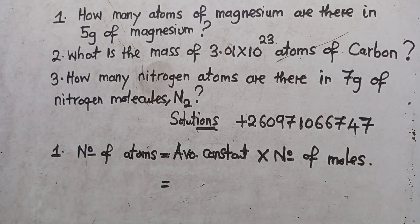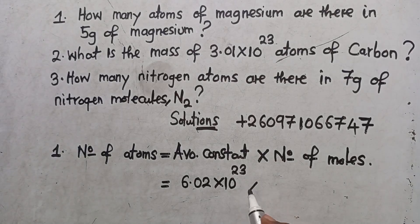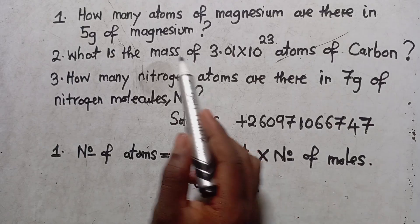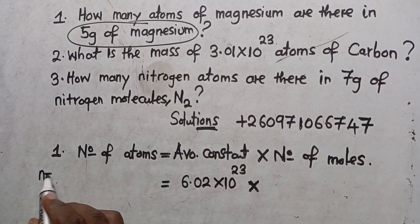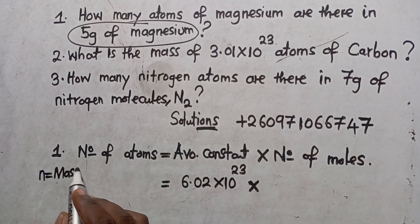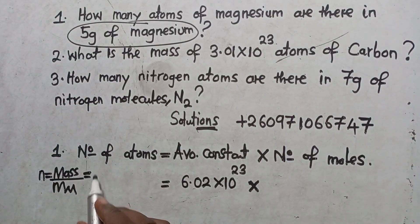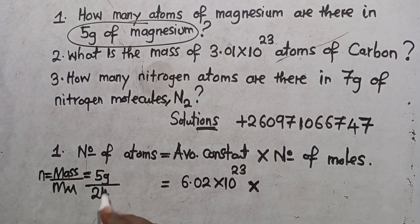What is the Avogadro's constant? The Avogadro's constant is 6.02 — some people say 6.022, but it is just one and the same — times 10 to the power 23. Then you get to multiply it with the number of moles. So how do we calculate the number of moles? Number of moles is given by the formula: mass over molar mass. In this case, the mass is 5 grams over the molar mass of magnesium, which is 24 grams per mole.